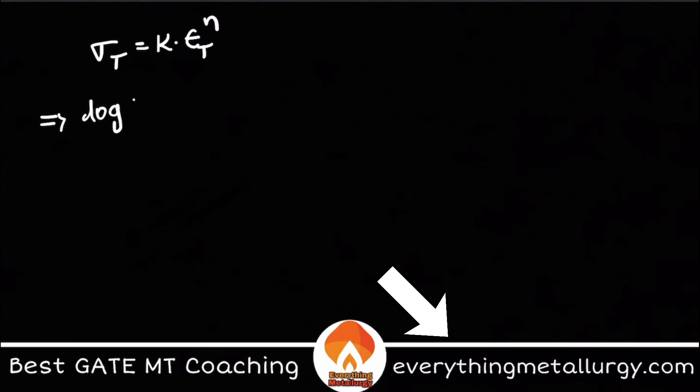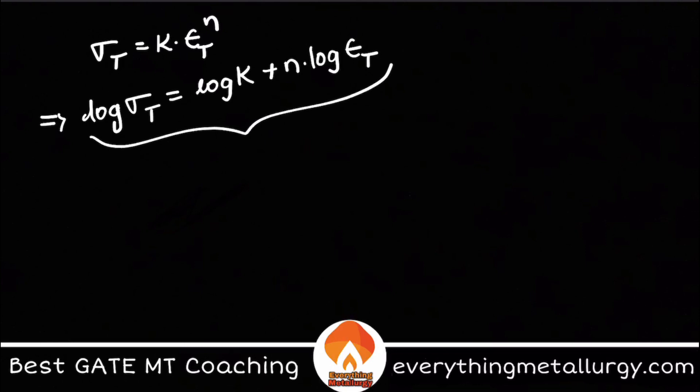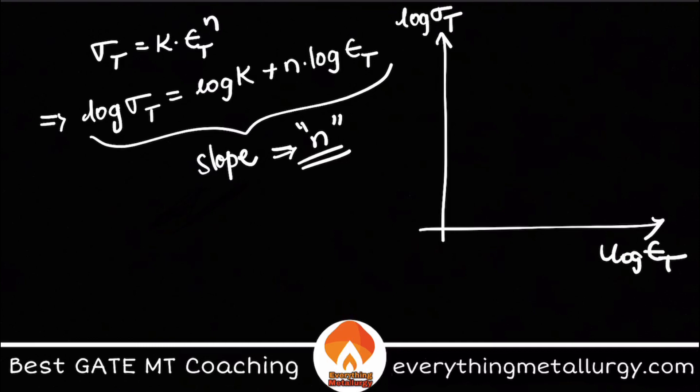By applying log, if you have this as my equation, this will be log sigma t equals log k plus n times log of epsilon t. If you try to plot this, the slope of this particular line is resembling y equals mx plus c, so the slope is nothing but my n. This is log sigma t and this is log epsilon t. Something like this will be my curve and the slope will be n, and my intercept will be log k. So this is log of your flow curve or Hollomon equation.